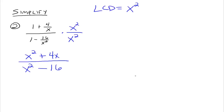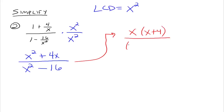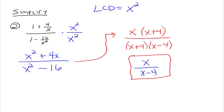To simplify, we need to factor the numerator and the denominator. In the numerator we can take an x out and leave x plus 4. The denominator is the difference of two squares: x plus 4 times x minus 4. We see that x plus 4 is common to both numerator and denominator, so they divide out to 1, and we're just left with x over x minus 4.